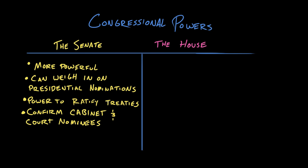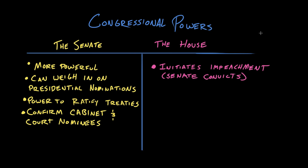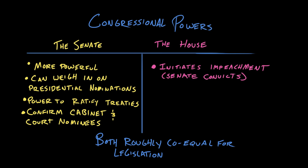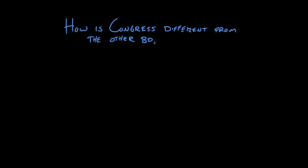Are there particular powers reserved to the House of Representatives? The House of Representatives is allowed to initiate impeachment proceedings against the president. If the House votes in favor of impeachment, then the Senate holds a trial to determine whether the official gets convicted or not. As a general matter, though, they're roughly co-equal. For the big, important things like passing legislation, you need both of them to work together.